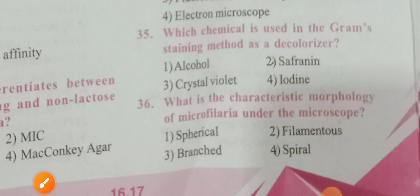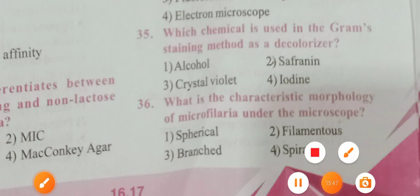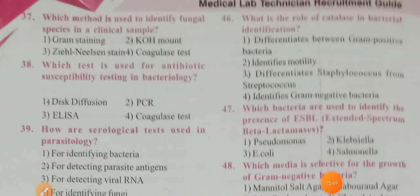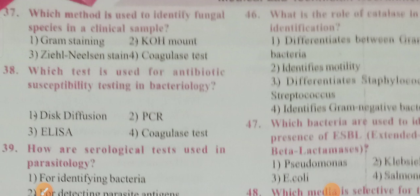What is the characteristic morphology of Microsporum under the microscope? Options: spherical, filamentous, branching, spiral. Option 4 is the correct answer. Which method is used to identify fungal species in clinical samples? Options: Gram stain, KOH mount, Ziehl-Neelsen stain, coagulase test. Option 2 is the correct answer — KOH mount.